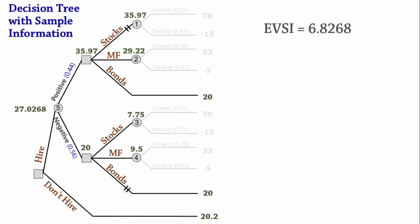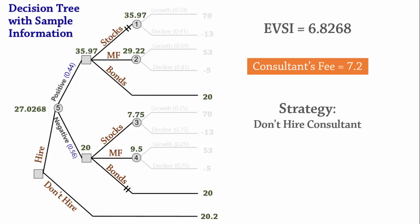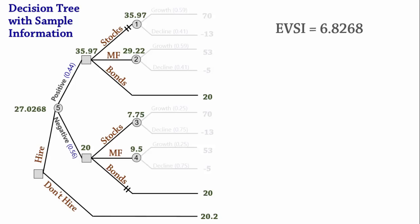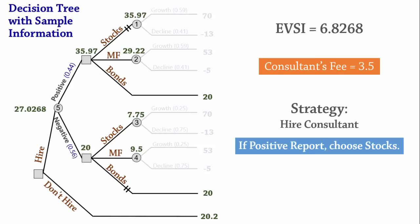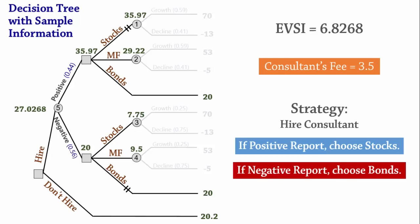Now let's see how to use EVSI to determine the best decision strategy. Suppose the cost to hire the consultant is 7.2, which is higher than EVSI — the fee is higher than the value added by the consultant — so the decision strategy will be not to hire the consultant, and we will stick to our initial decision and invest in stocks. On another note, suppose the consultant's fee is 3.5, which is less than EVSI. Then the strategy will be: hire the consultant; if the consultant's report is positive, invest in stocks; if the consultant's report is negative, invest in bonds. And that's how to calculate and use the EVSI to determine the best decision strategy.